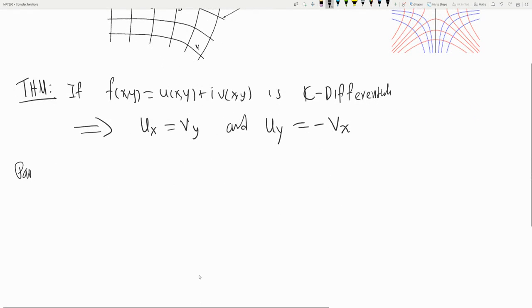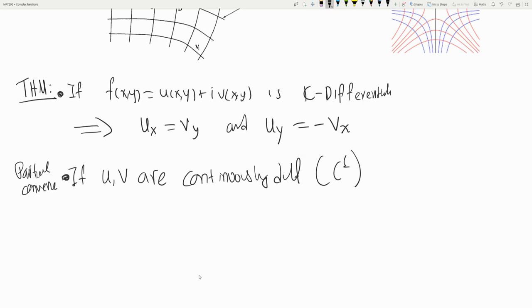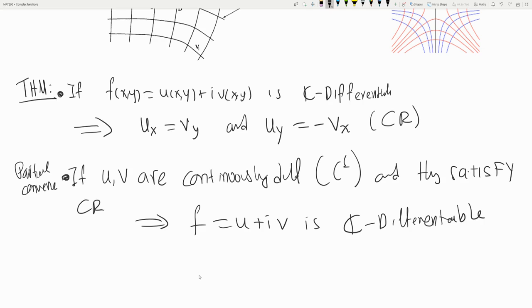And we have a partial converse. If u and v are continuously differentiable, so their derivatives are continuous, we also call it C1, and they satisfy CR, then f = u + iv is C-differentiable. So the extra condition is this - otherwise we would have done back and forth error, but we need to require that the derivative is continuous.